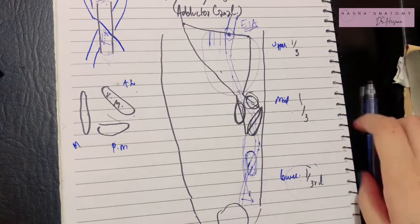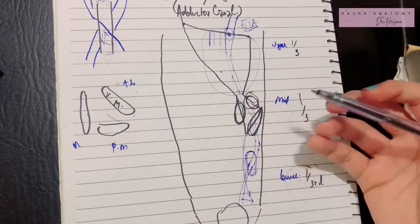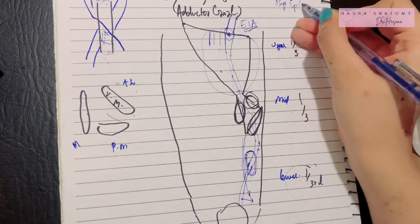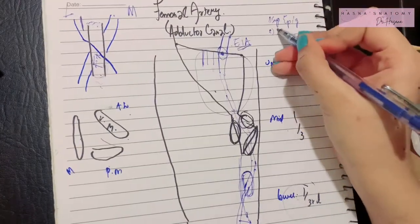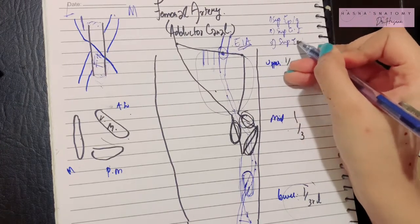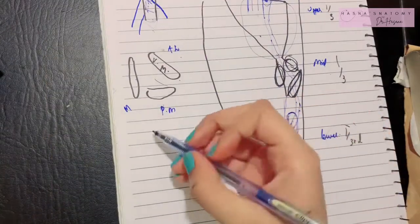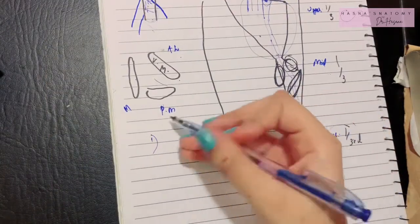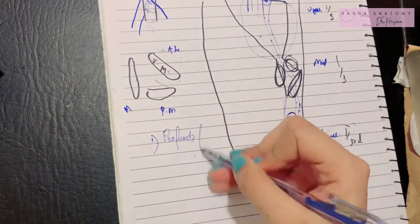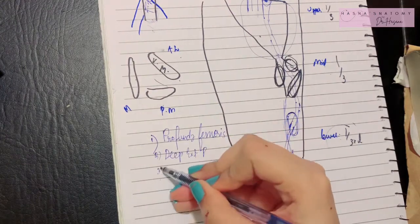Regarding the branches, the femoral artery in the femoral triangle gives about three superficial and three deep branches. The three superficial branches include the superficial epigastric artery, the superficial circumflex iliac artery, and the superficial external pudendal artery. The deep branches are more important — the largest is the profunda femoris artery, along with the deep external pudendal artery and muscular branches.